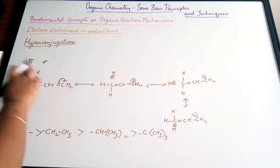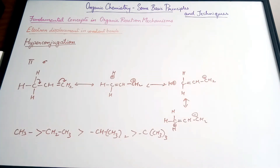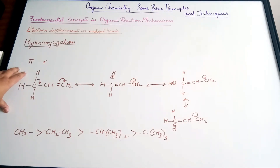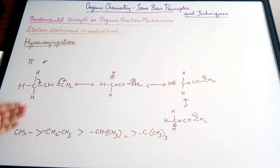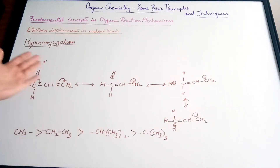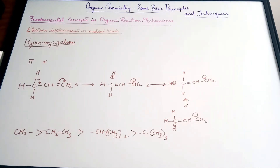So basically, if this carbon atom had just a CH3, the number of hyperconjugated structures would be the highest. If there is one CH3 substituted, then obviously one of these would not be possible. If two are substituted, then just one would be possible, and if three are substituted, the hyperconjugated structures are even fewer. There is also an orbital concept behind all of this.